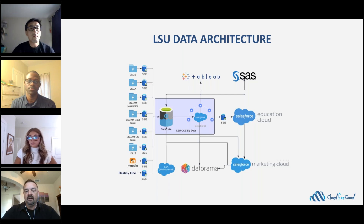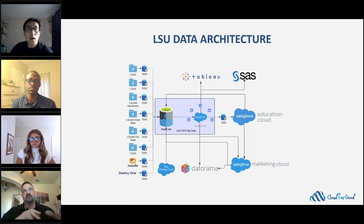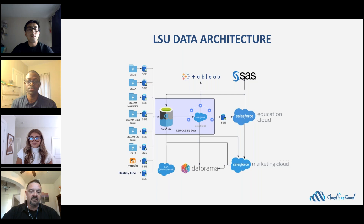Looking at the diagram, what we've done is use a combination of a data lake and Data Cloud as a warehouse. All of the data we have flows back into the data lake — that's really just raw sets of data. Then we take all that data, filter it, structure it, and put it in Data Cloud. Data Cloud then becomes the source of truth. So anything we need, we get from Data Cloud — it becomes the source for Tableau, for reporting, and even for Education Cloud.